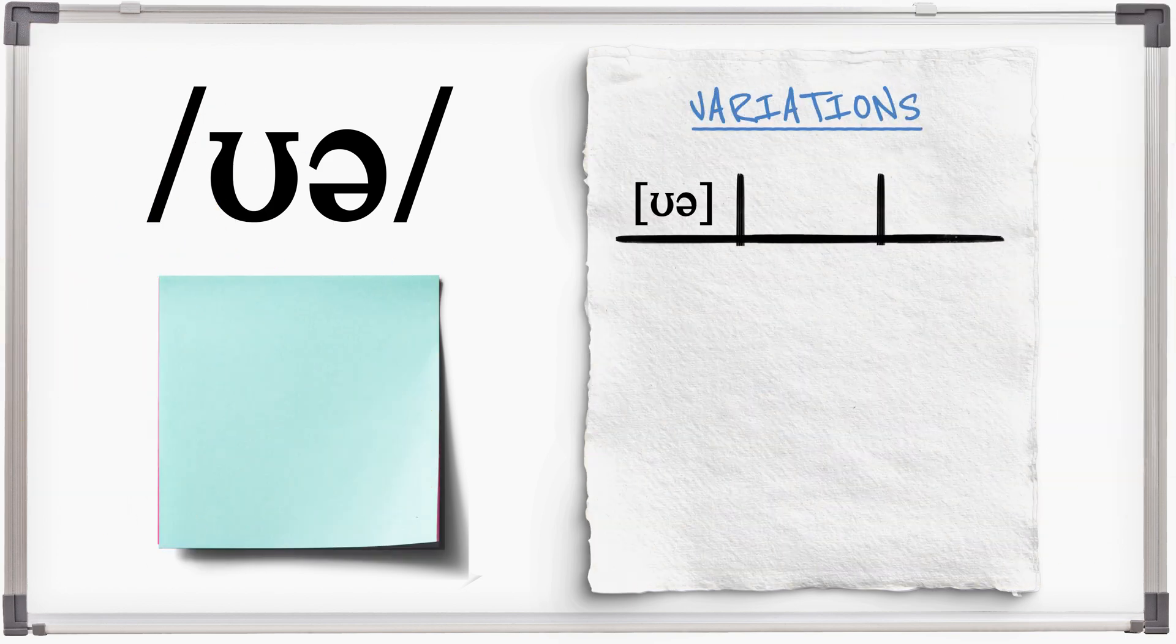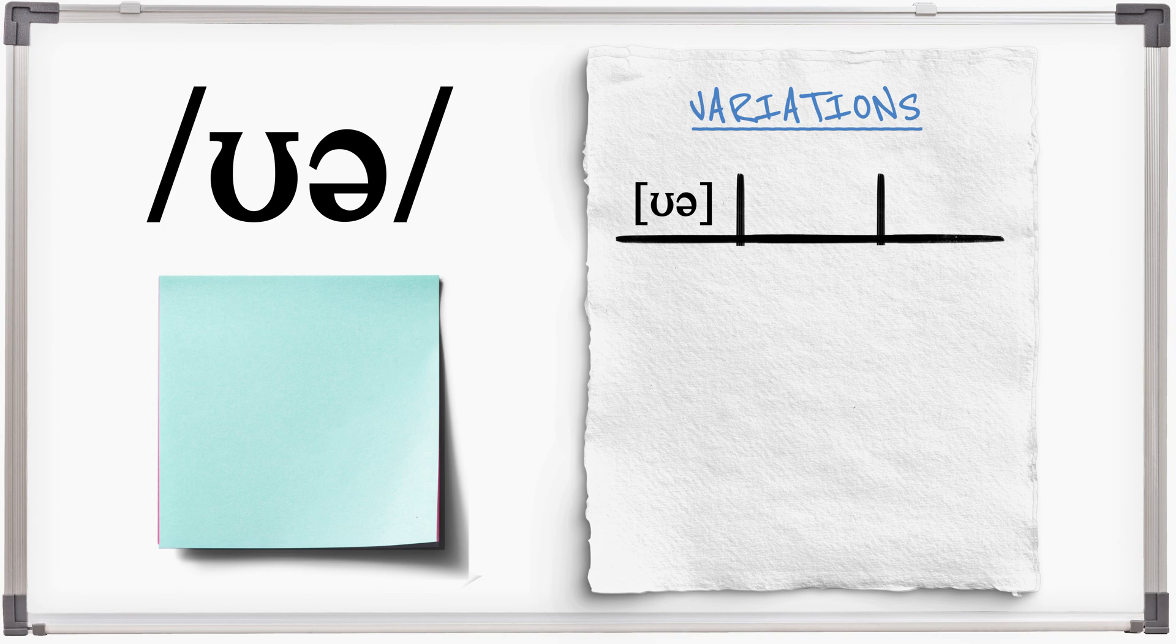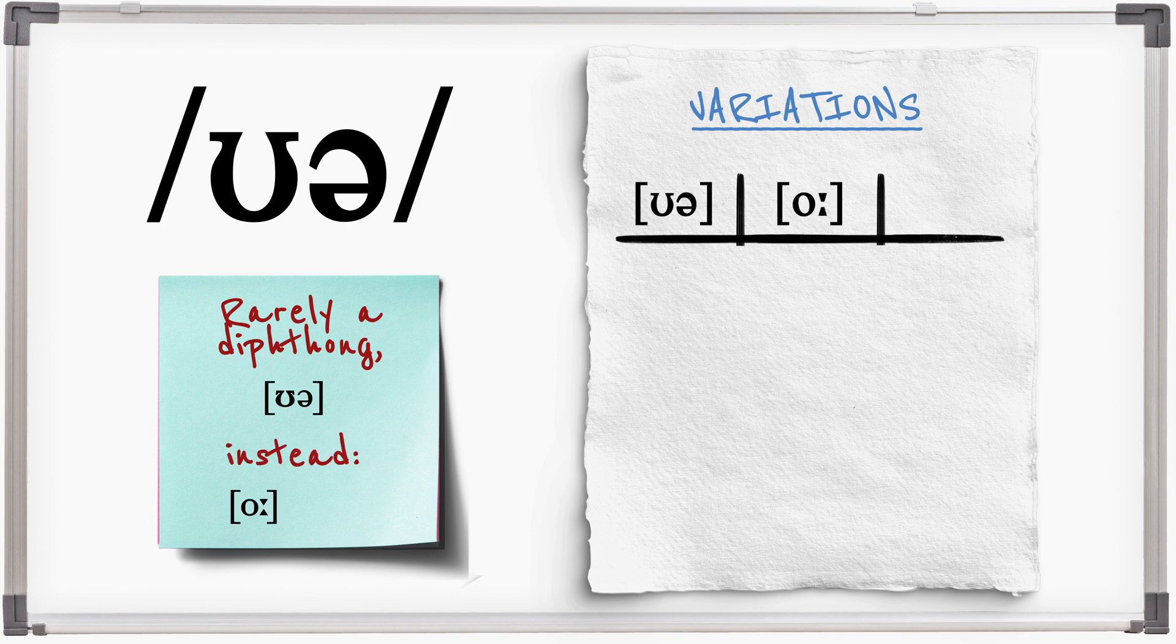Although Ur is included as a phoneme in all major British English IPA charts, the reality is that it is rarely pronounced as a centering diphthong Ur anymore. For many speakers it has merged with long back sound Ur, though many people use a long monophthong Ur.